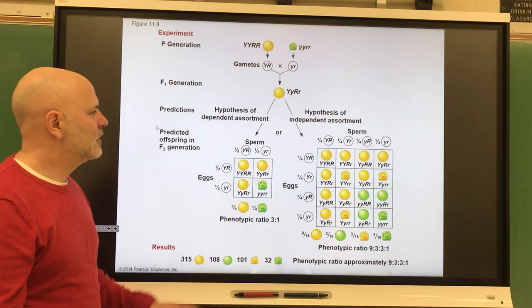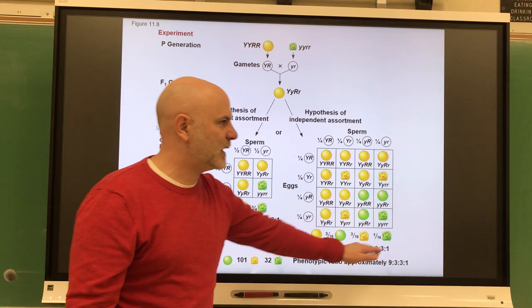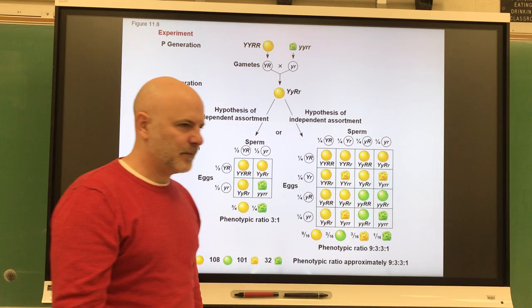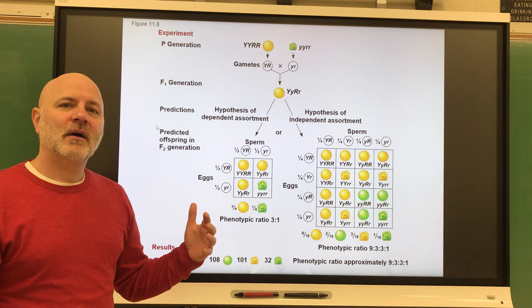And what he got was this over here. As you can see, his phenotypic ratio out of this was a nine to three to three to one. Now, go to the video where I talk about dihybrid crosses.